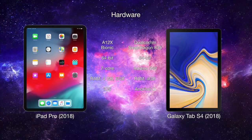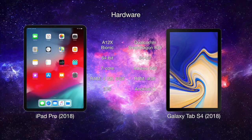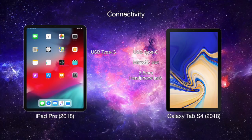If you choose the 1TB iPad Pro model, you will be getting 6GB of memory. The rest of the storage capacities come with 4GB of memory, while all Galaxy Tab S4 models come with 4GB of memory. The iPad Pro has an iOS operating system while the Samsung Tablet runs on Android Oreo. Both tablets come with a USB-C port. The Galaxy Tablet has an additional microSD card slot and a 3.5mm headphone jack, which you don't get on the iPad Pro.